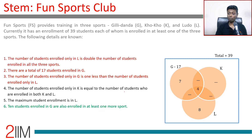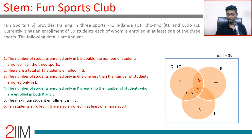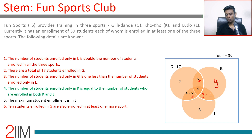The 10 students enrolled in G also enrolled in at least one more sport: the G∩K region plus 4 (all-three) plus the G∩L region adds up to 10, so G∩K and G∩L sum to 6. Call G∩K as x, then G∩L is 6 minus x. Now for the K constraint: only-K equals the number enrolled in both K and L. Call the K∩L region y; then only-K equals y minus 4, and together only-K plus K∩L gives y plus (y minus 4).